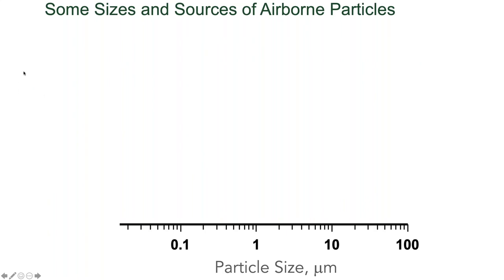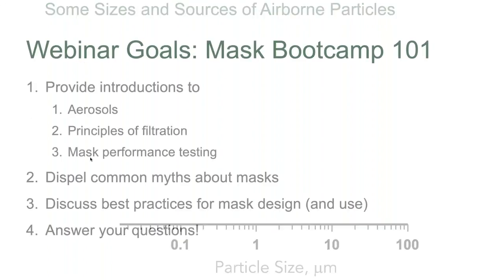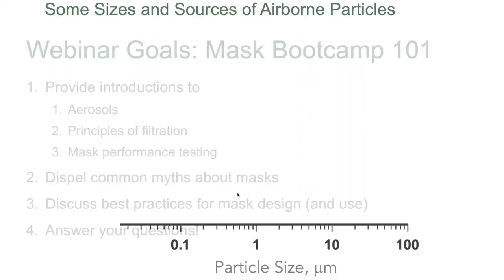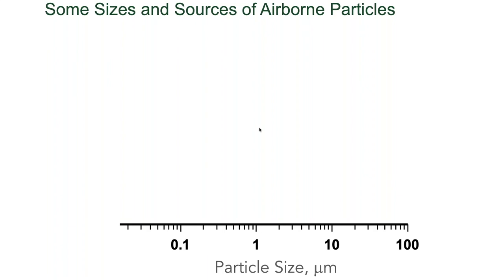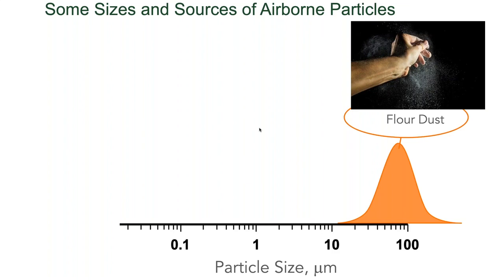I want to begin by talking about airborne particles. You probably haven't thought a lot about aerosols until recently. They come in lots of shapes and sizes. On the bottom of this plot, we see a particle size scale going from about 0.1 to 100 microns. At 100 microns, you might think about something like flour dust — you can put it between your fingers, and those particles don't stay in air very long. They fall to the floor in under a minute.